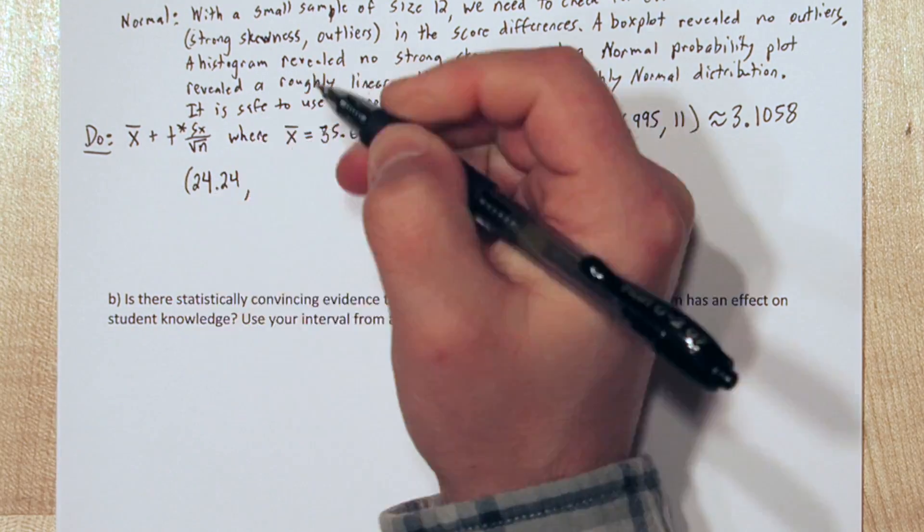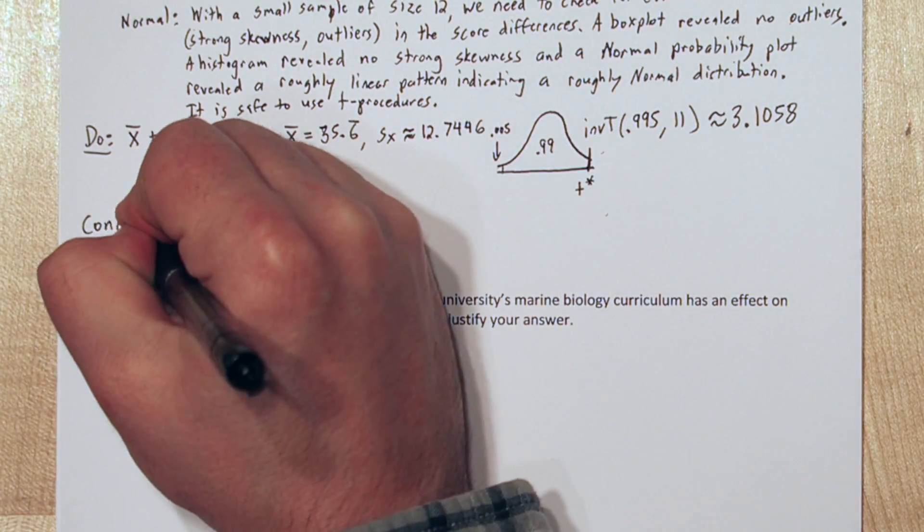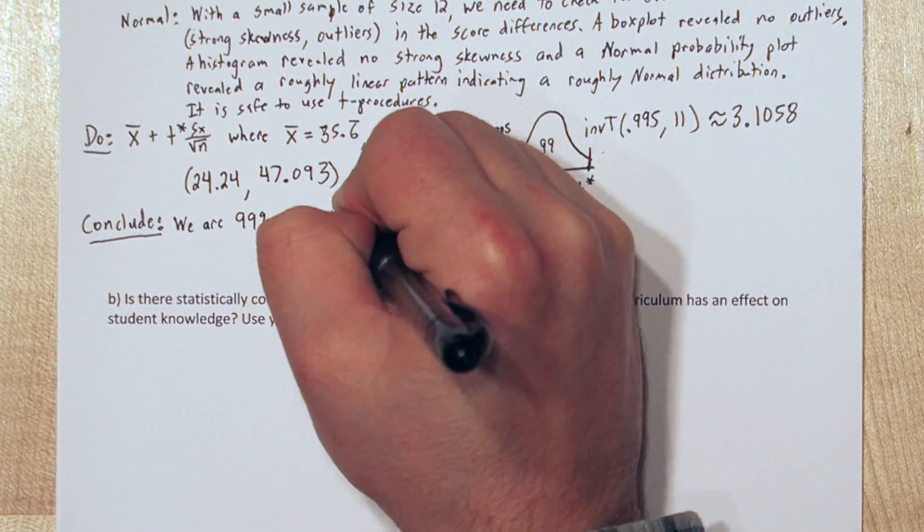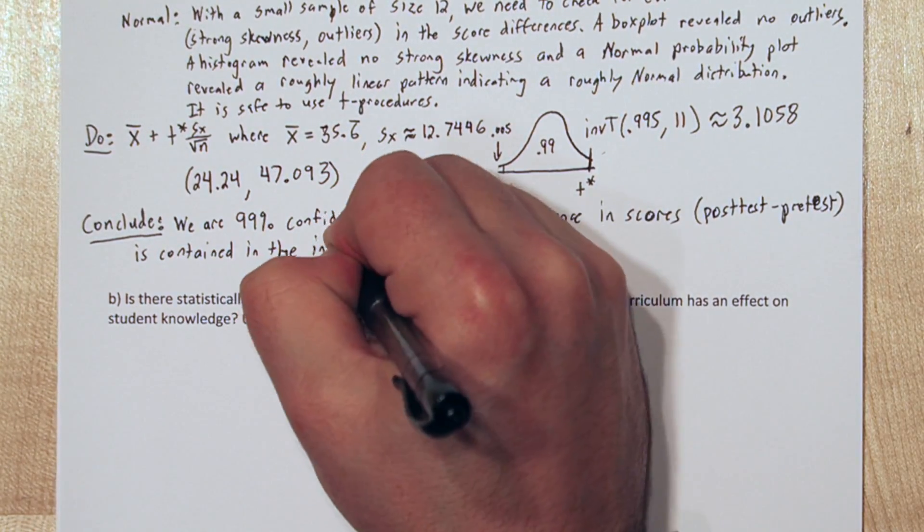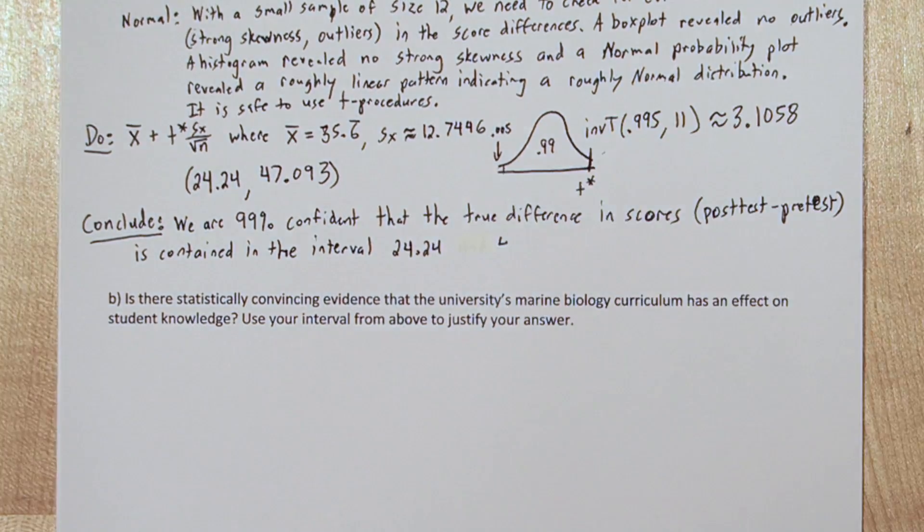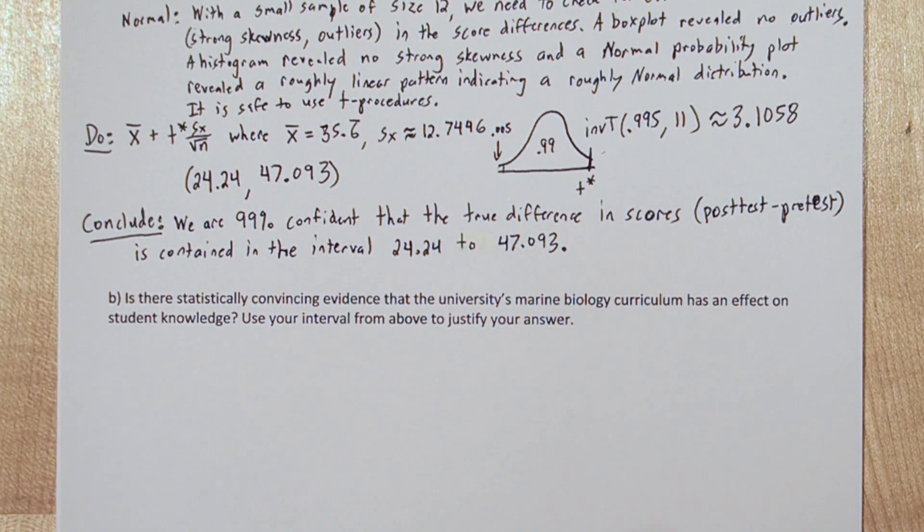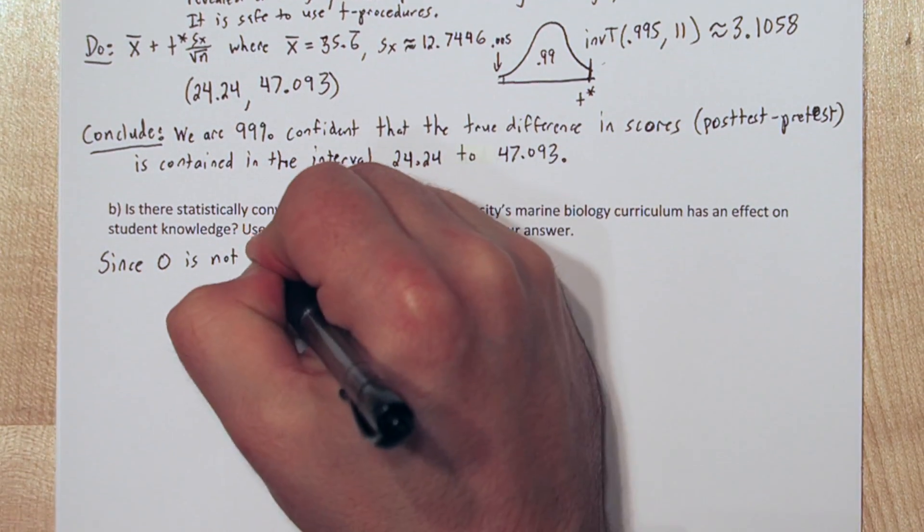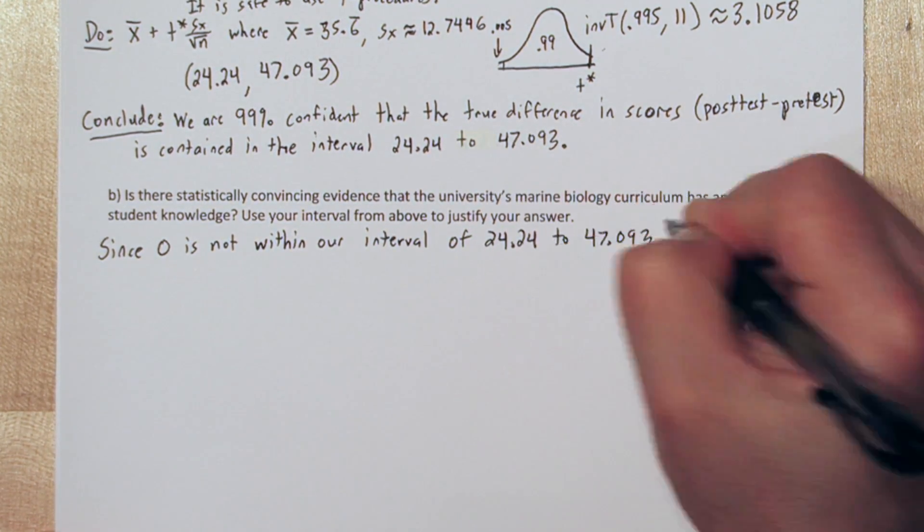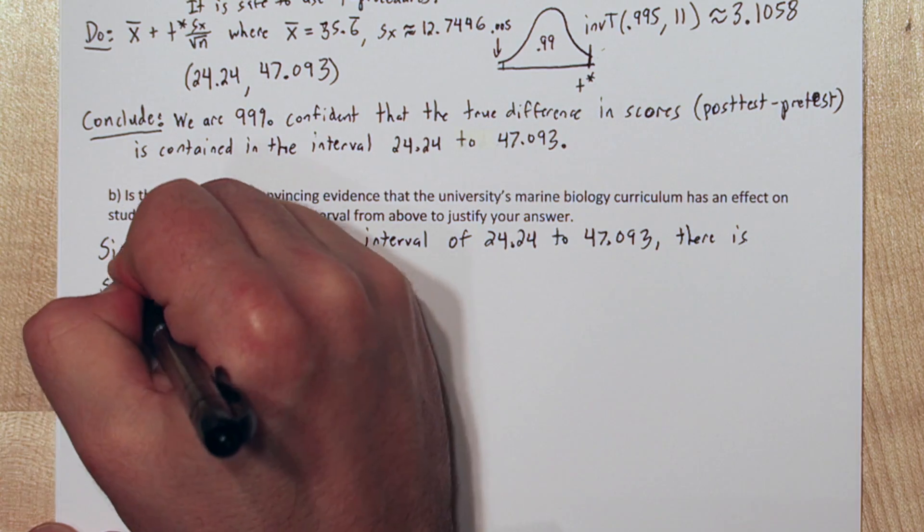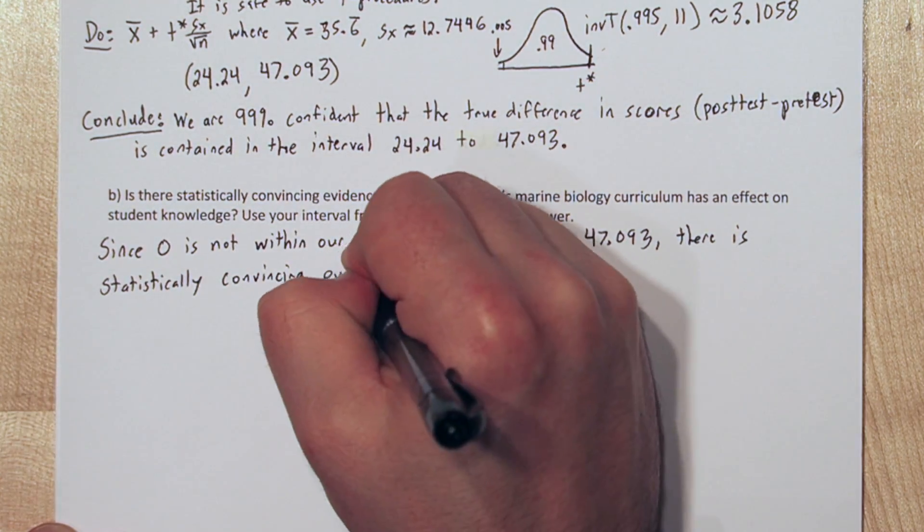Now, we're ready to conclude. We are 99% confident that the true difference in scores is contained in the interval 24.24 to 47.093. Now, notice the entire interval is positive, and that 0 is not contained in the interval.